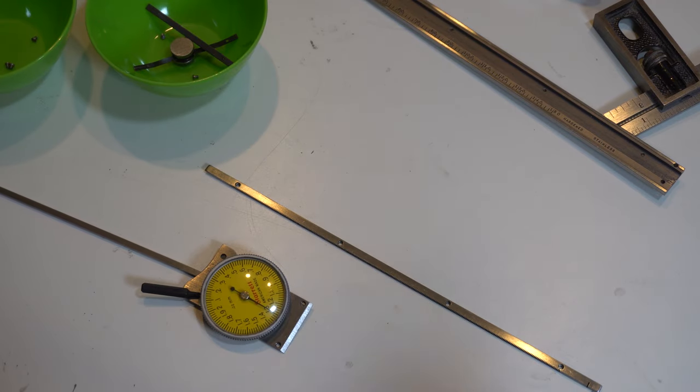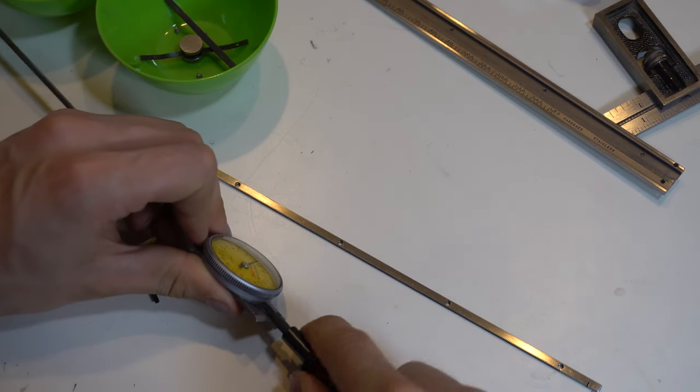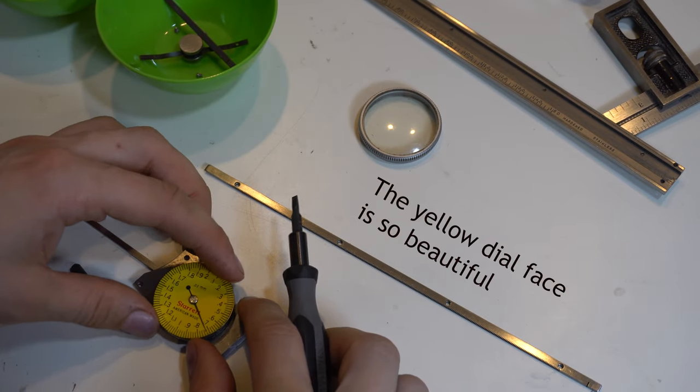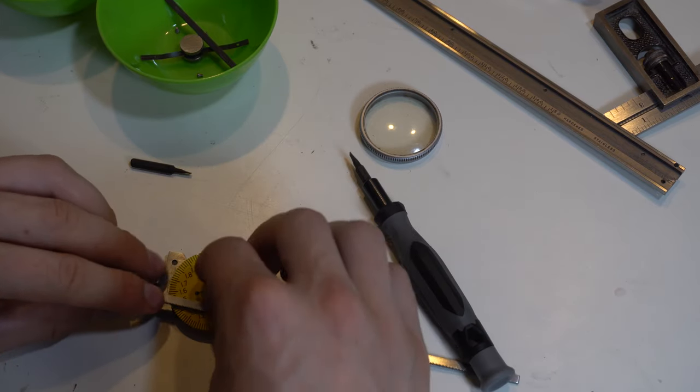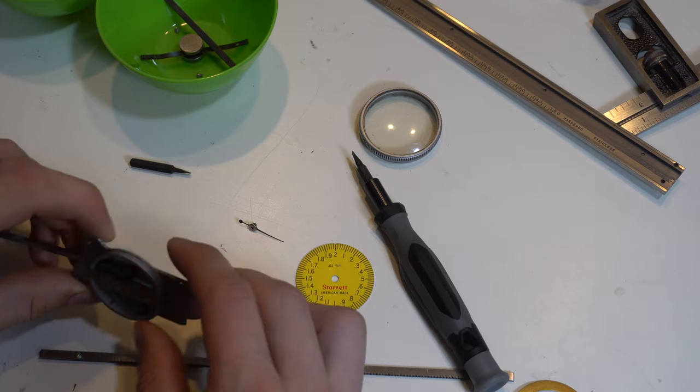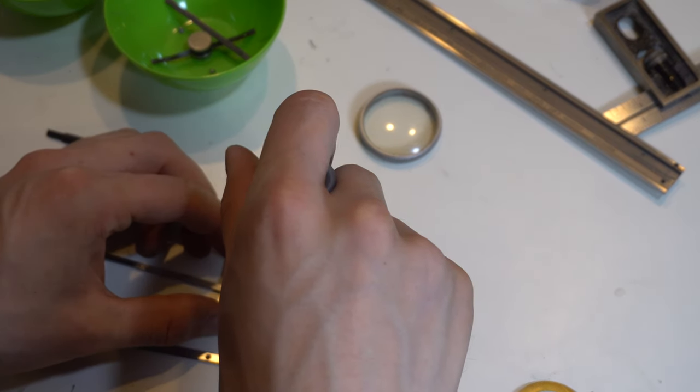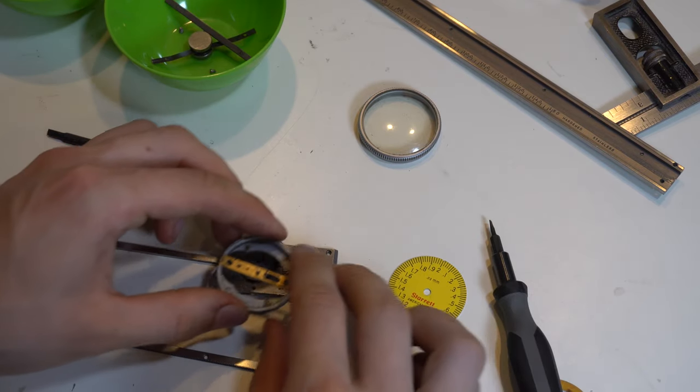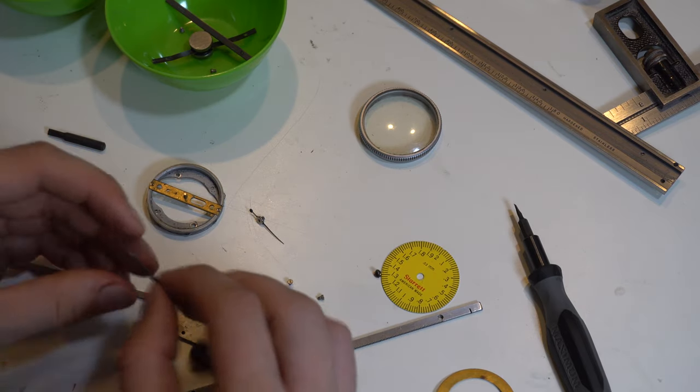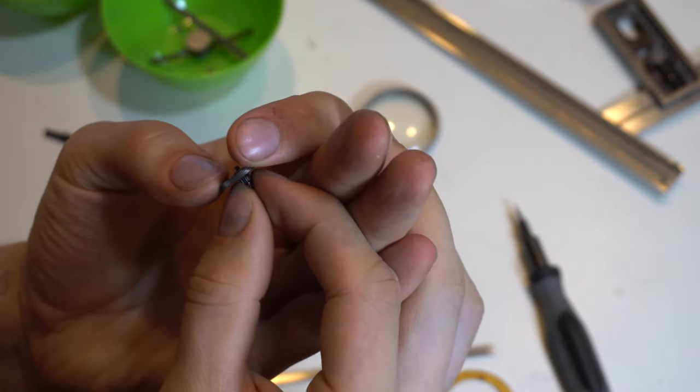Now, to take the dial face off, I'm just going to pry. I'm not going to use any padding or tape because I don't really care about the finish. But if you're working on a nice caliper, you really should. There's kind of two gears here, and the top one spins independently of the bottom one. That's really interesting.